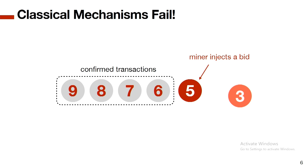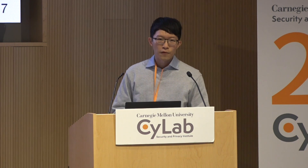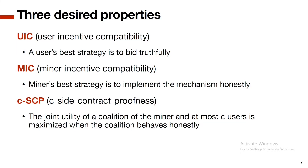From this example, if you run a second-price auction on the blockchain, the miner itself or a miner-user coalition can steal profit from other users. This leads us to three desired properties: first, UIC (user incentive compatibility) — users should have a simple strategy, namely bidding truthfully; second, MIC — the miner has no incentive to deviate; third, C-SCP (coalition strategy-proofness) — the joint utility of a miner colluding with users should not increase by deviating from the protocol.